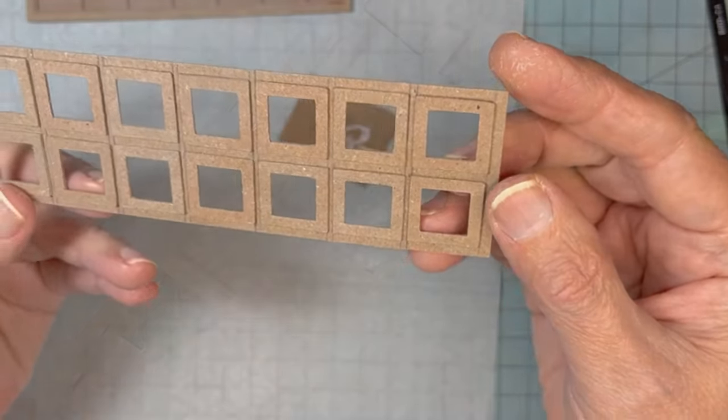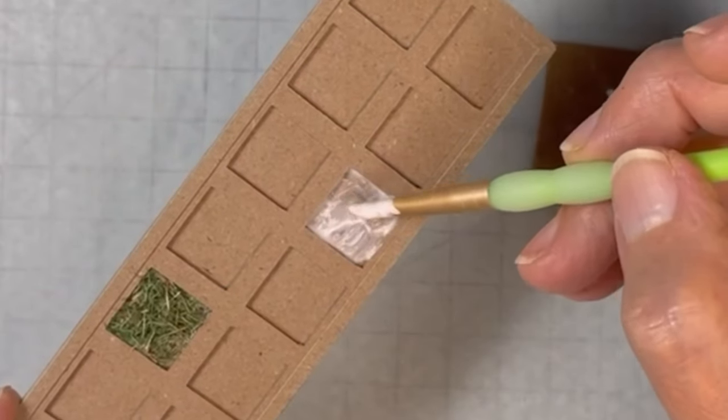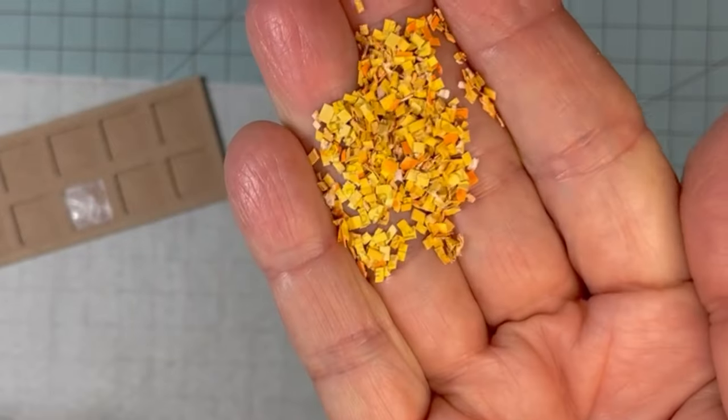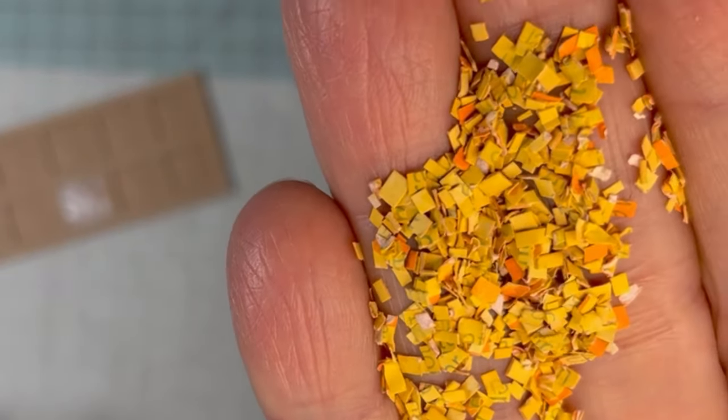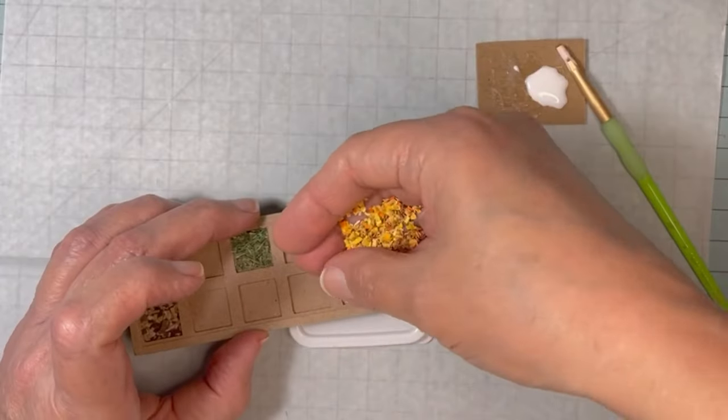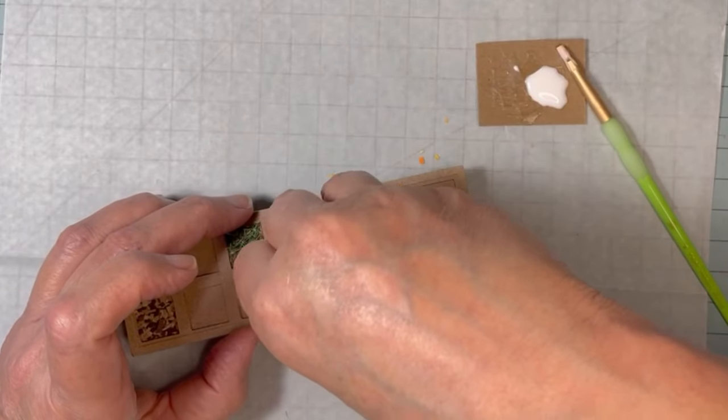Now the fun part, gluing all the food into each little section. I had this on hand. I used it to make flowers a long time ago. It's painted paper that I cut into little squares. It reminded me of corn.